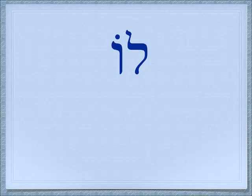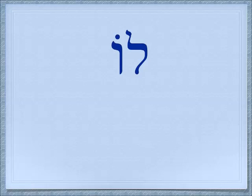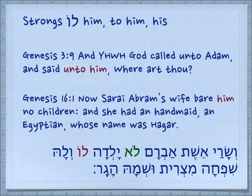One of the main confusing things about that lo which means 'no,' is this lo which means either 'to him' or 'his.' The negative particle 'no' always has an aleph — whether it has the vav or not, it always has an aleph. This lo is made up of the preposition lamed, which means 'to,' and the personal pronoun o — lo — to him or his. You will not find an entry for this listed in Strong's.